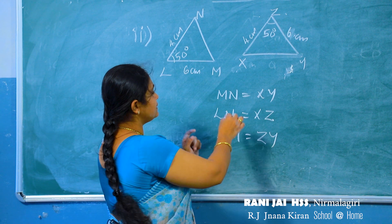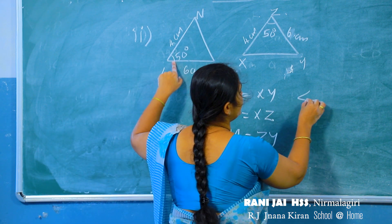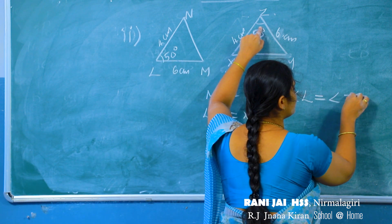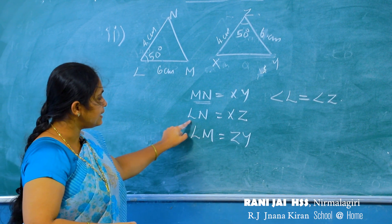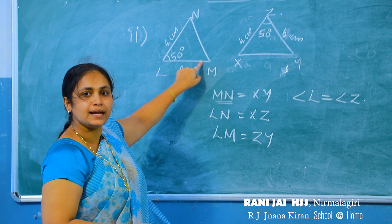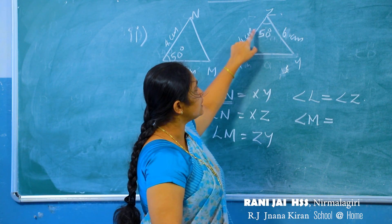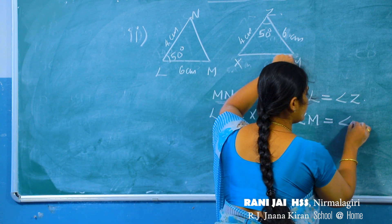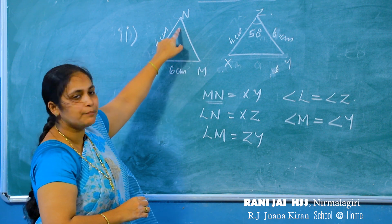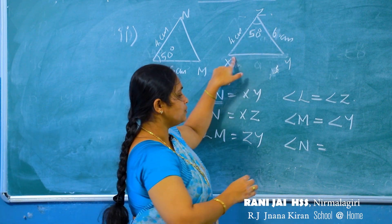For finding the equal angles: the opposite angle of MN is angle L, and the opposite angle of XY is angle Z, so angle L equals angle Z. The opposite angle of LN is angle M, and the opposite angle of XZ is angle Y, so angle M equals angle Y. The opposite angle of LM is angle N, and the opposite angle of ZY is angle X, so angle N equals angle X. These are the matching angles.